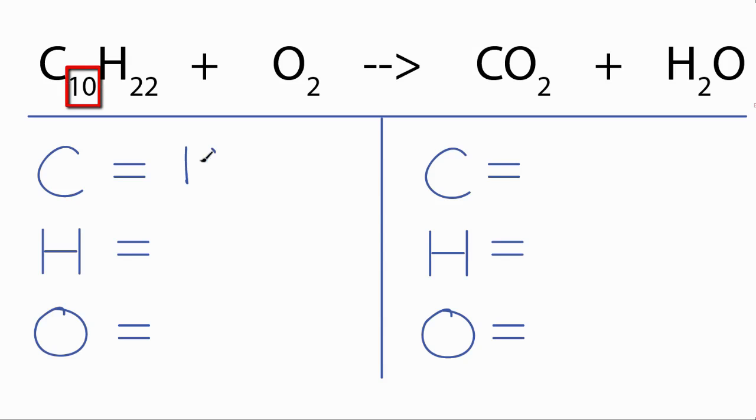We have 10 carbons, we have 22 hydrogens, and 2 oxygens. On the product side, we have 1 carbon, we have 2 hydrogens, and the oxygens we have 2, but don't forget the one with the water, for a total of 3 oxygens.